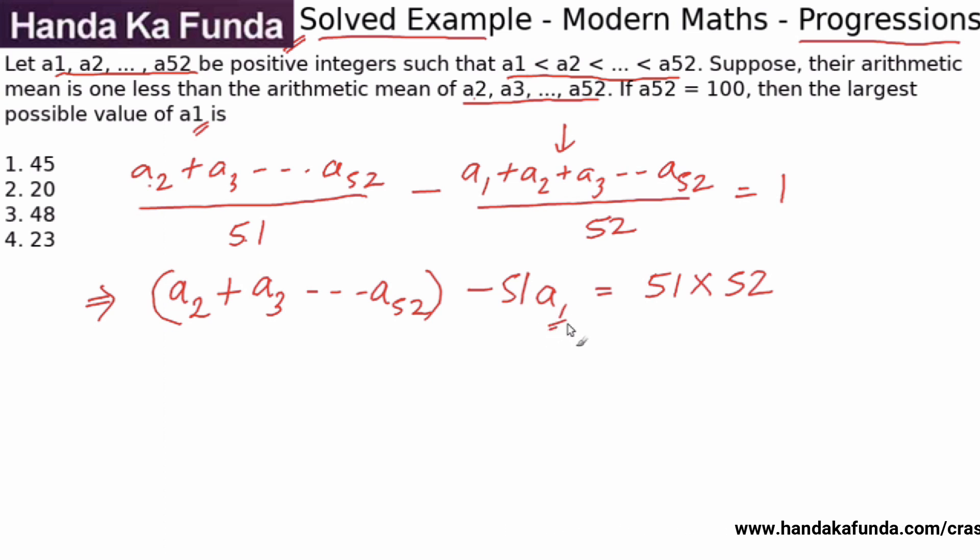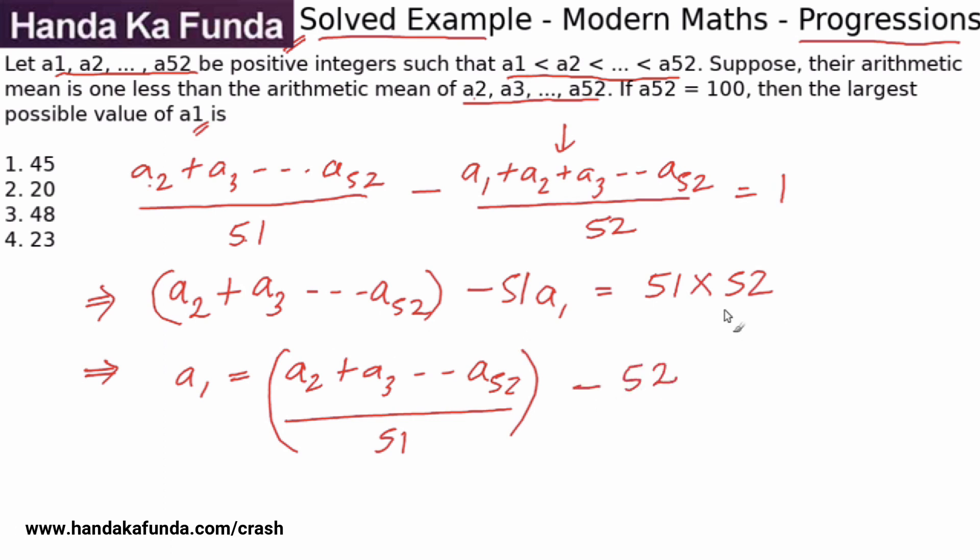Now, my goal is to maximize this particular value of a1. When will this be maximum? You are subtracting something from this. Let me try and simplify this equation. So this will become a1 equals a2 plus a3 till a52 divided by 51 minus 52. So what I have done is I have divided the entire equation by 51 and shifted it to the other side. When will this be maximum? a1 is what we are trying to maximize. This will be maximum when all of these values are also at their peak, also maximum.